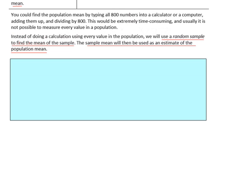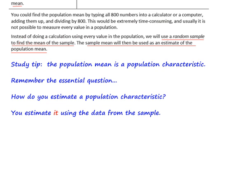You could find the population mean by typing all 800 numbers into a calculator or a computer, adding them up, and dividing by 800. This would be extremely time consuming, and it usually is not possible to measure every value in a population. Not only that, but you would probably have an error in your data entry. Instead, we will use a random sample to find the mean of the sample. The sample mean will then be used as an estimate of the population mean. The population mean is a population characteristic — you estimate it using the data from the sample.